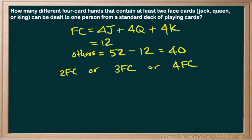So two face cards. What does that mean? That means we had 12 face cards and we chose two of them. Now to make sure that the others weren't face cards, we'd have to be very careful and say that the others came from our group of others.